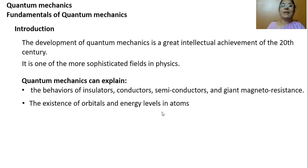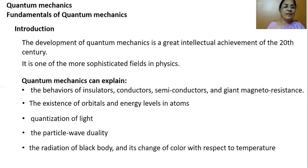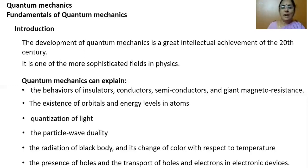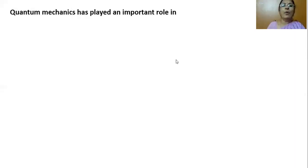Quantum mechanics can explain the atomic theory, the various orbitals and energy levels in atoms. It could explain the quantization of light, the particle-wave duality, the radiation of a black body and its change in color with respect to thermal temperature, and the presence of holes and transport of holes and electrons in electronic devices.